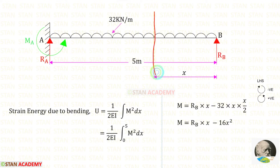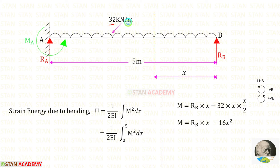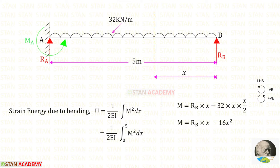Up to the section we have RB and the uniformly distributed load of 32. RB is acting in the anticlockwise direction, so it will be positive, and the distance is X, giving RB into X. The UDL is acting in the clockwise direction, so it will be negative. For the UDL we multiply with the distance and distance by 2, which simplifies to 16. X into X gives X squared, so M = RB·X − 16X².